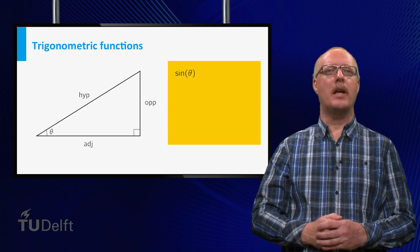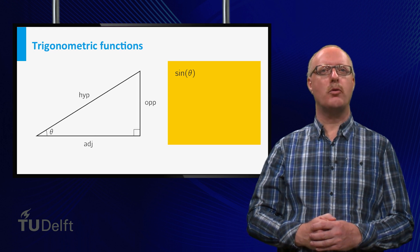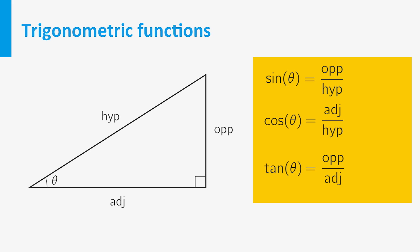The trigonometric functions are usually defined as the ratio of two sides in a rectangular triangle. For the acute angle theta, we have: the sine of theta is the length of the opposite side divided by the length of the hypotenuse; the cosine of theta is the length of the adjacent side divided by the length of the hypotenuse; and the tangent is the length of the opposite side divided by the length of the adjacent side, which equals the sine of theta divided by the cosine of theta.